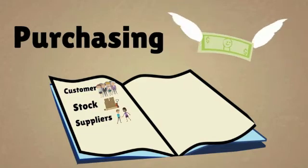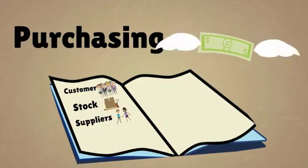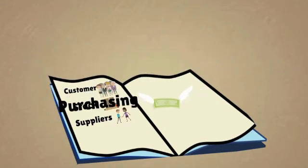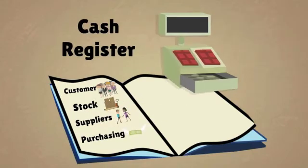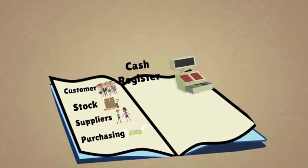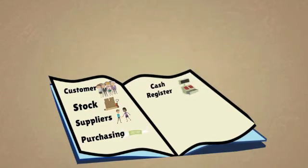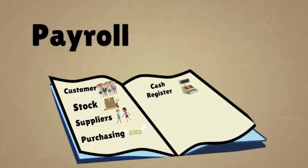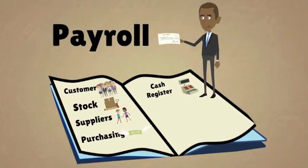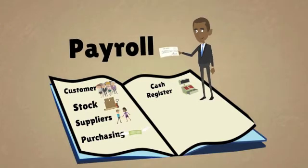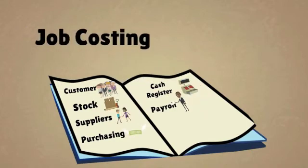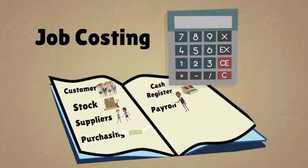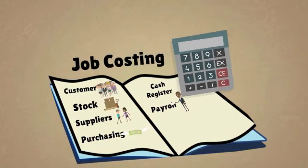When you make purchases, that goes into the purchasing subledger. When you're making quick customer transactions using a cash drawer and docket printer, that information goes into the cash register subledger. When you're paying wages to workers, that goes into the payroll subledger. When you allocate funds for specific jobs, that goes into the job costing subledger.